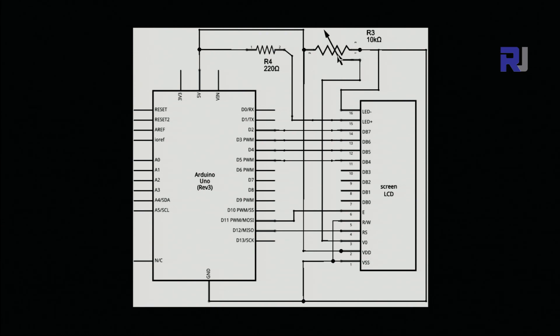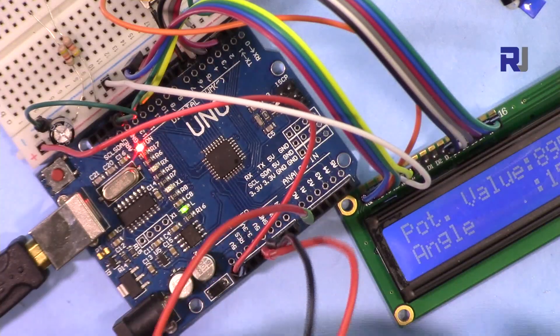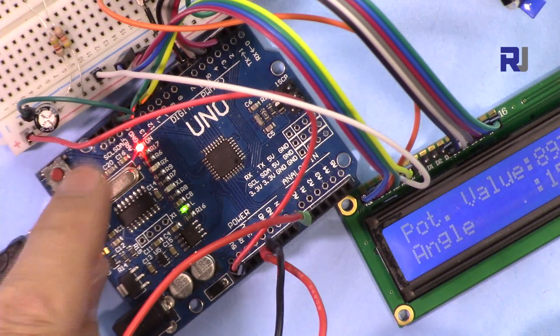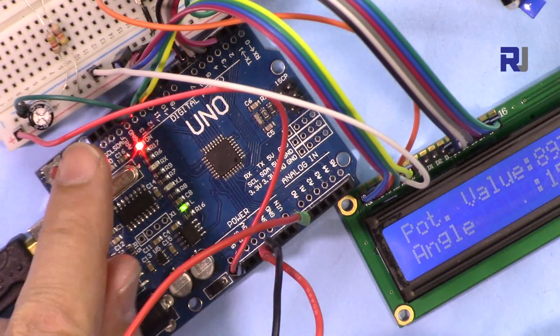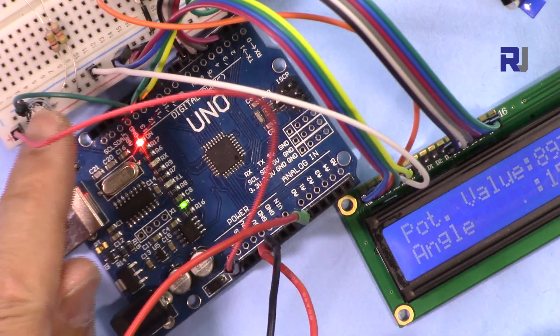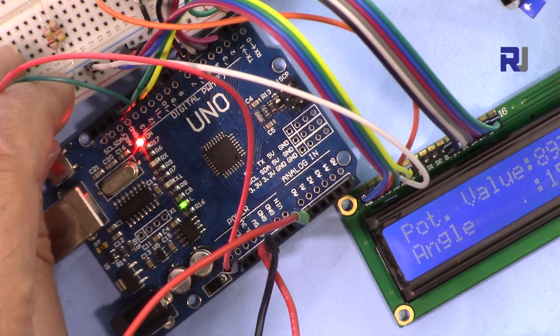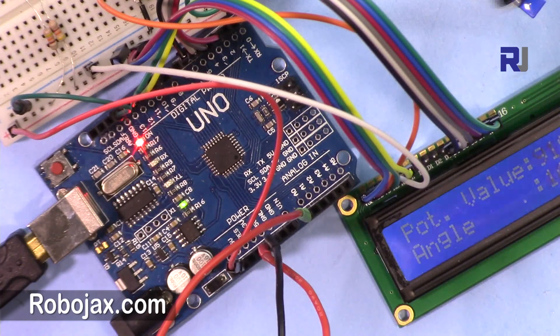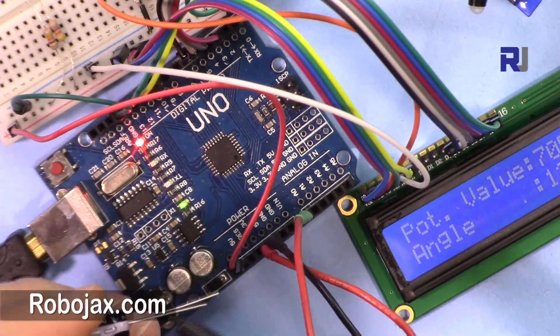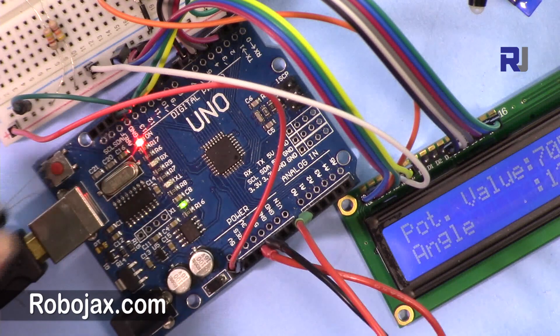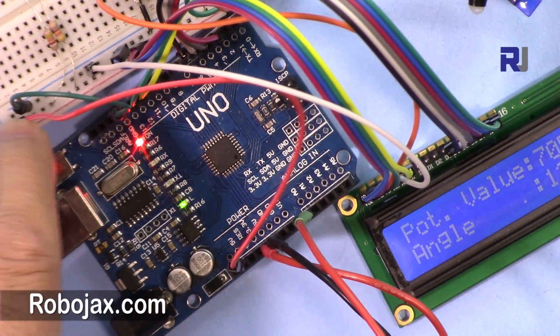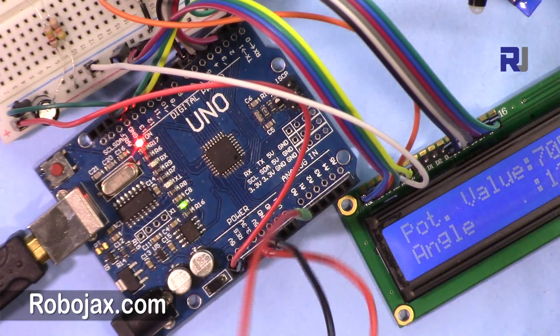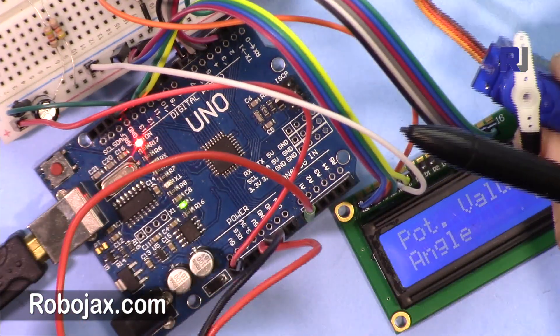One thing to mention: I have included this capacitor, 470 microfarad. You can put 220 and above, 10 volts, because if I remove this, somehow when the servo starts rotating it interferes. The short one is the negative and the long one is the positive. Just put it between a positive and negative terminal, and it will filter any noise that is created by the servo.